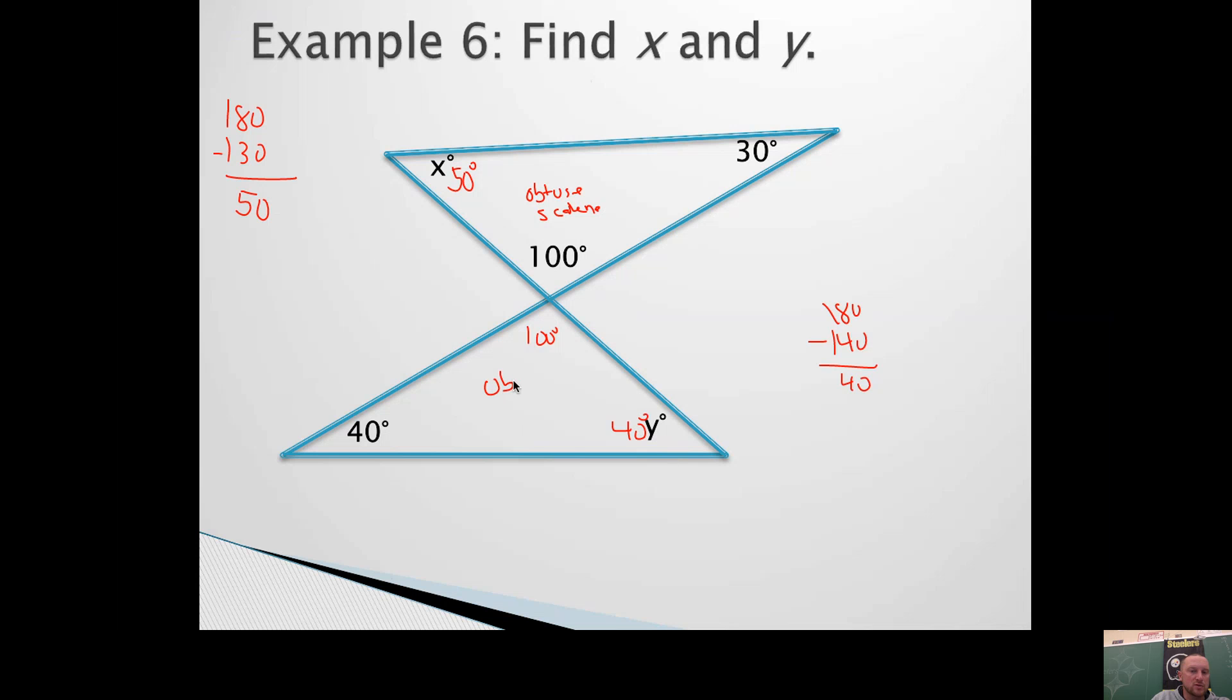So this is also an obtuse triangle. But notice how it's isosceles, because two of those angles match.